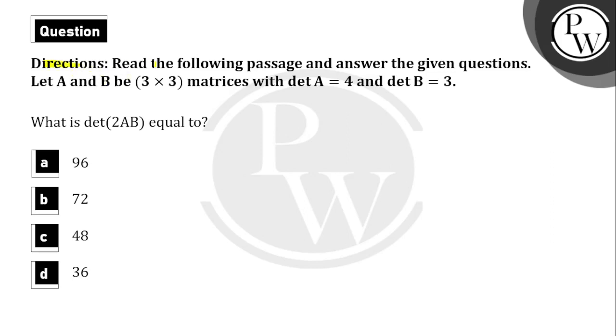Let's read the question. Directions: Read the following passage and answer the given questions. Let A and B be 3×3 matrices with determinant of A is 4 and determinant of B is 3. What is determinant of 2AB equal to? Options A, B, C, D are given here with four options.